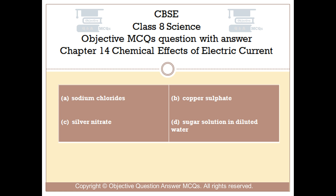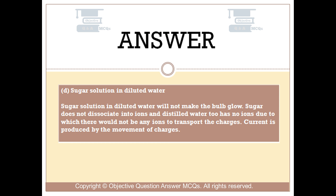The right answer is Option D — sugar solution in diluted water. Sugar solution in diluted water will not make the bulb glow. Sugar does not dissociate into ions, and distilled water too has no ions, due to which there would not be any ions to transport the charges. Current is produced by the movement of charges.